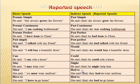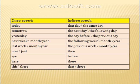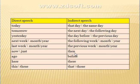The time expressions change according to the meaning of the sentence as follows: today becomes that day or the same day; tomorrow becomes the next day or the following day; yesterday becomes the day before or the previous day; next week becomes the following week; next month becomes the following month; next year becomes the following year; last week becomes the previous week; last month becomes the previous month; last year becomes the previous year; now becomes just then; ago becomes before; here becomes there; this becomes that; these becomes those.